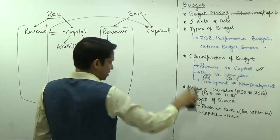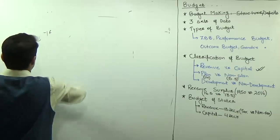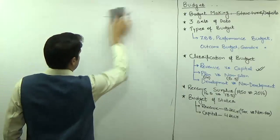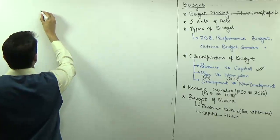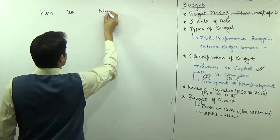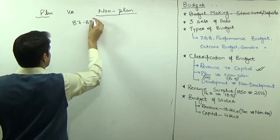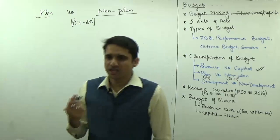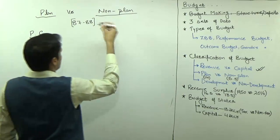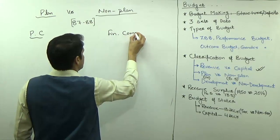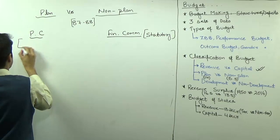The second classification is plan versus non-plan. Revenue versus capital is specified in the Constitution. Plan versus non-plan is an artificial distinction that started in 1987-88. The reason for this classification was that plan expenditure or grants under plan were provided by the erstwhile Planning Commission, while non-plan grants were given on the recommendations of the Finance Commission — also known as statutory grants. Plan grants were known as non-statutory or discretionary grants.